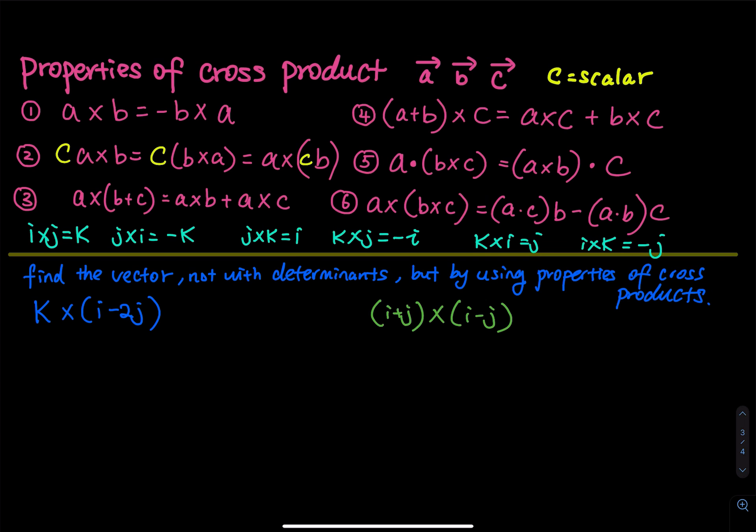Properties of cross product. In these properties, A, B, and C are vectors — I just don't want to draw a bunch of arrows on top of each letter. The yellow C is a scalar. We have six properties.